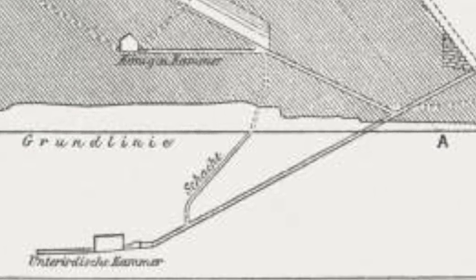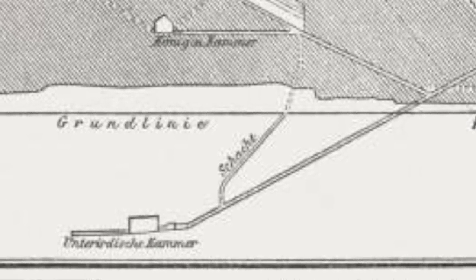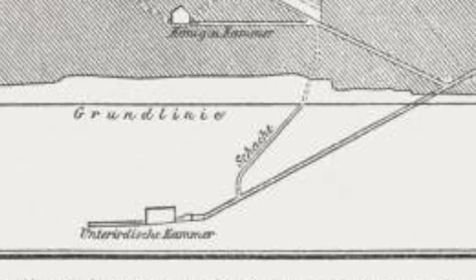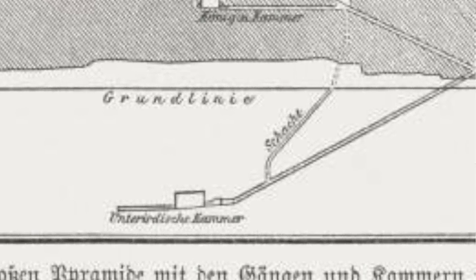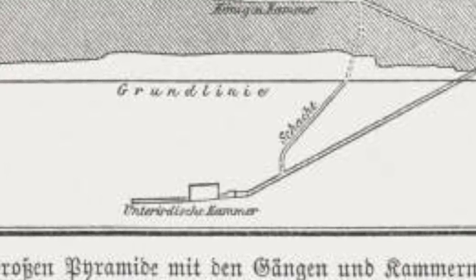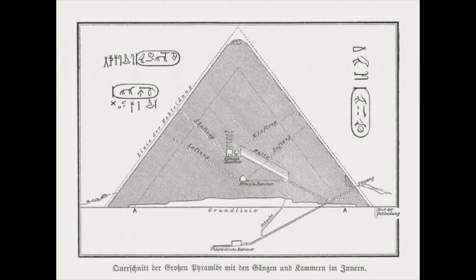The descending passages of the pyramids also seem replicated in this mythology — to get into hell, one must walk downhill and down a long slope. That seems to be what the descending passages of the pyramids literally are. I've made a video before showing that the Giza pyramid literally has three Germanic levels: Helheim, Midgard, and Asgard.